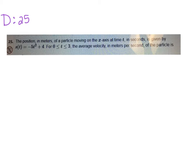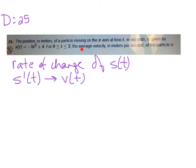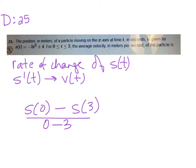The next question I was asked about is number 25 on the diagnostic. The position in meters of a particle moving on the x-axis is given by the following equation, and we're looking for average velocity. Average velocity is the rate of change of position. Instantaneous velocity is s′(t) or v(t). Average velocity — slope of the secant line — is the rate of change of s(t), so s(0) minus s(3) all over 0 minus 3 will give you the average velocity.